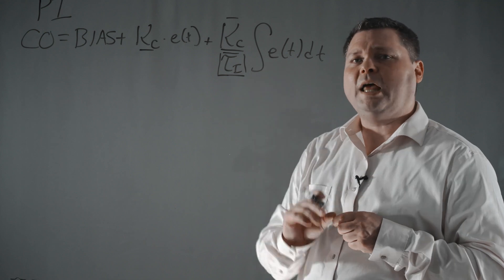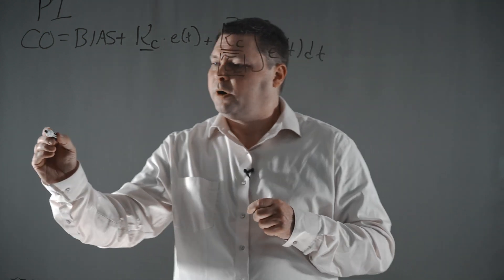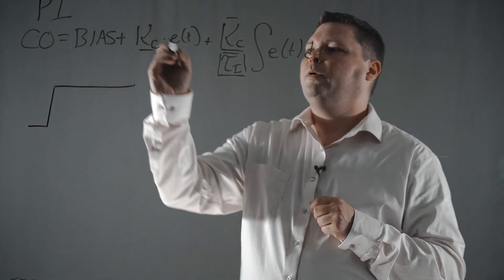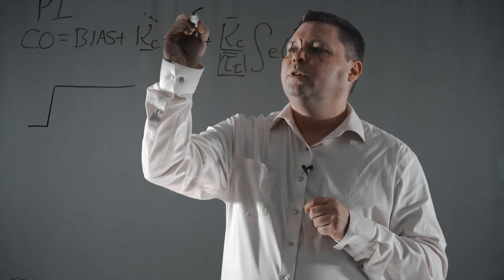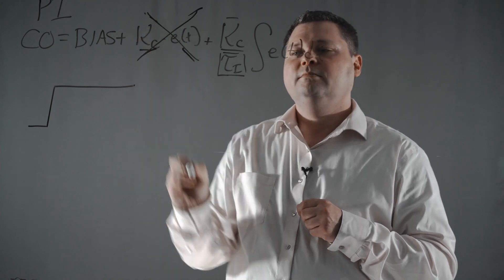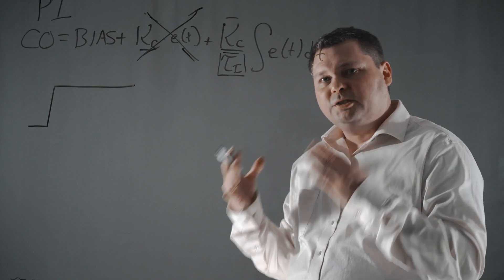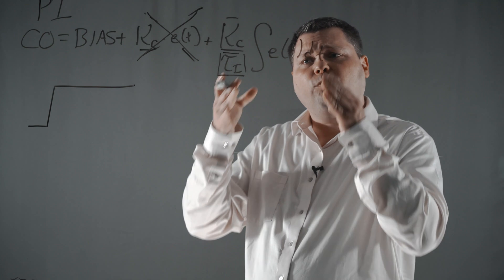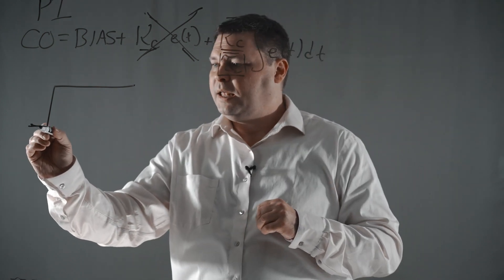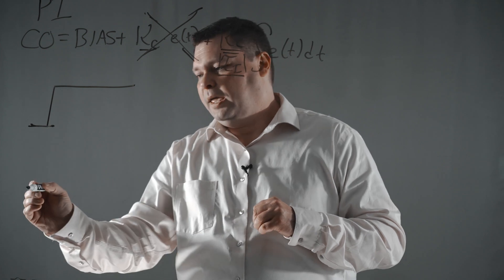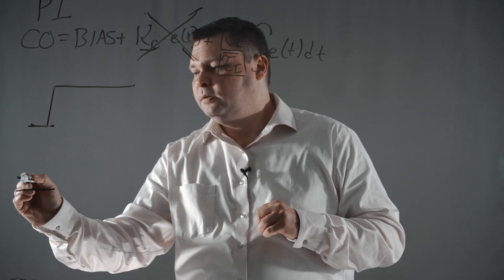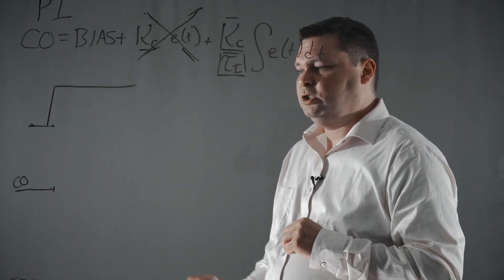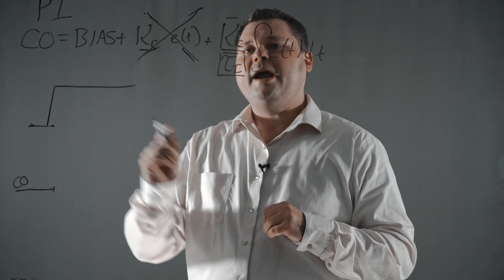So let's take a look at what the integral action does, starting with a very simple example. We're going to make a set point change on a process and remove the proportional term — we'll look at just what the integral does. This is an I-only controller, just so we can see the influence of the integral term. We have some process variable and a controller output that starts at some value, and right when we make that set point change, we introduce error into the system.